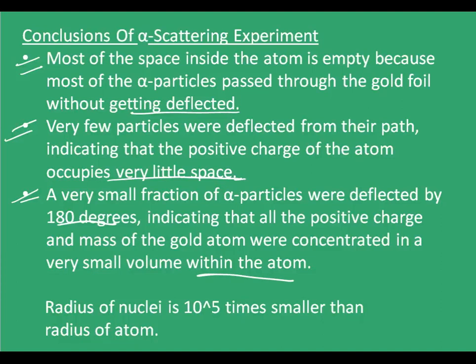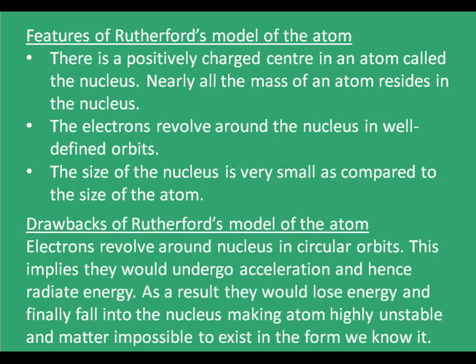Rutherford calculated that the radius of the nucleus is about 10⁵ times smaller than the radius of the atom. The features of Rutherford's model are: there is a positively charged center in an atom called the nucleus; nearly all the mass of an atom resides inside the nucleus; the electrons revolve around the nucleus in well-defined orbits; and the size of the nucleus is very small compared to the size of the atom.